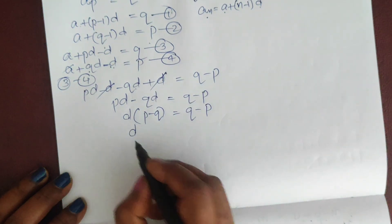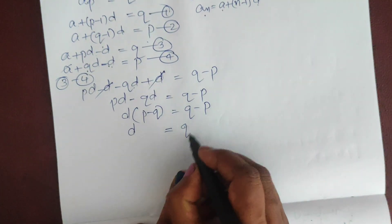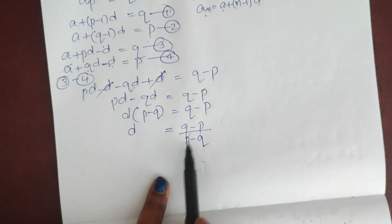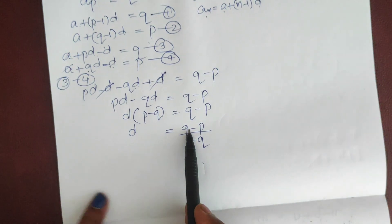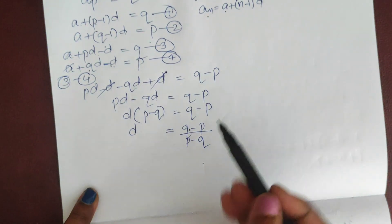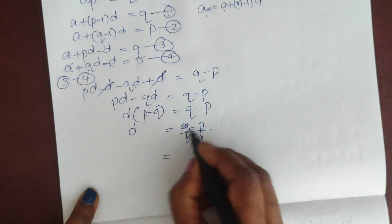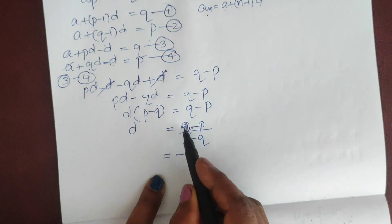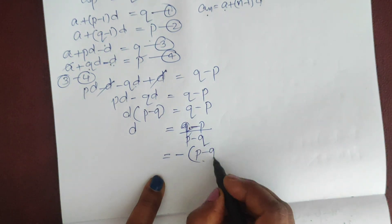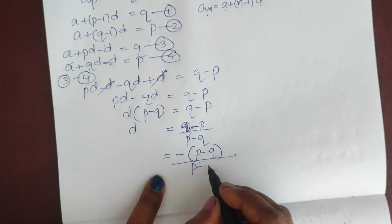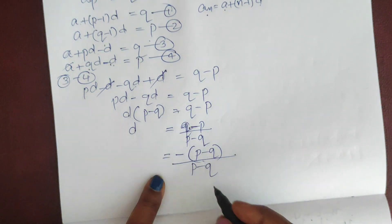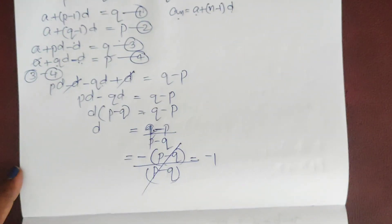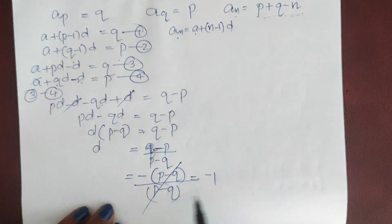So what is d? d = (q - p) / (p - q). Now we cancel: both numerator and denominator are negatives of each other, so p - q cancels, giving d = -1. This is the value of d.